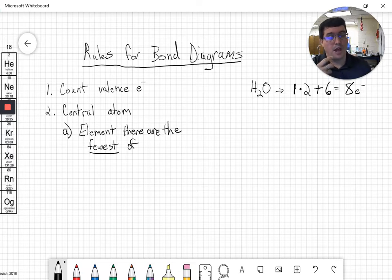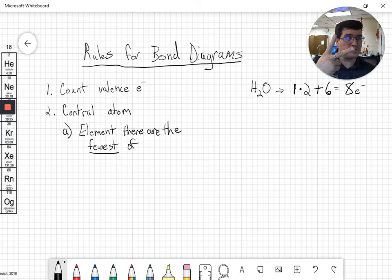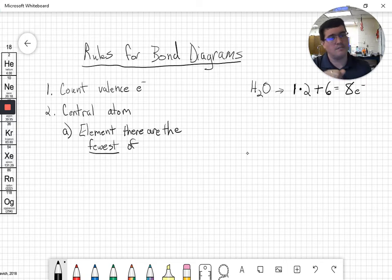I call it the no duh rule because if you had to pick out of here, oxygen versus hydrogen, well, there's two hydrogens but there's only one oxygen. So if you had to pick something to be the center, you're probably going to guess it's going to be the element we only have one of, and that would be oxygen. So in our case, by the no duh rule, oxygen is going to be our central element.